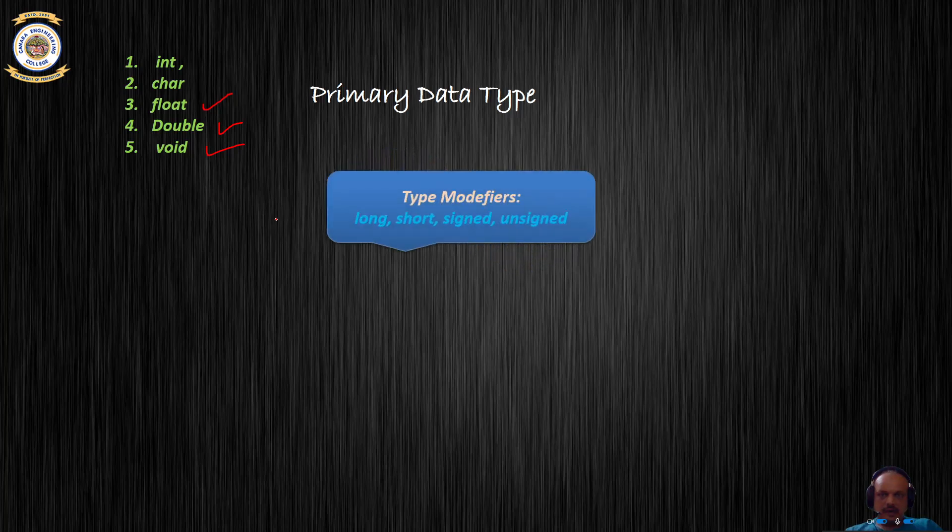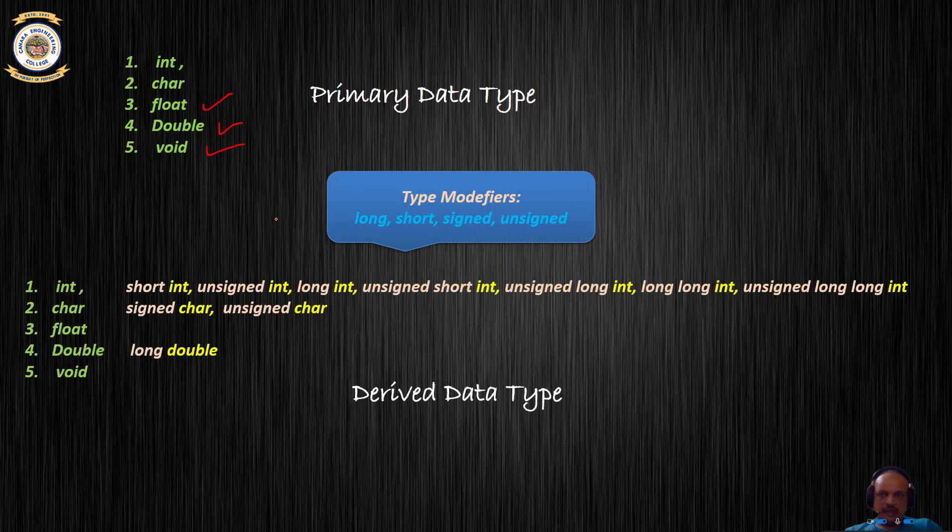In C we have four type modifiers: long, short, signed, and unsigned. These type modifiers can be associated with the five primary data types in order to get the derived data type.